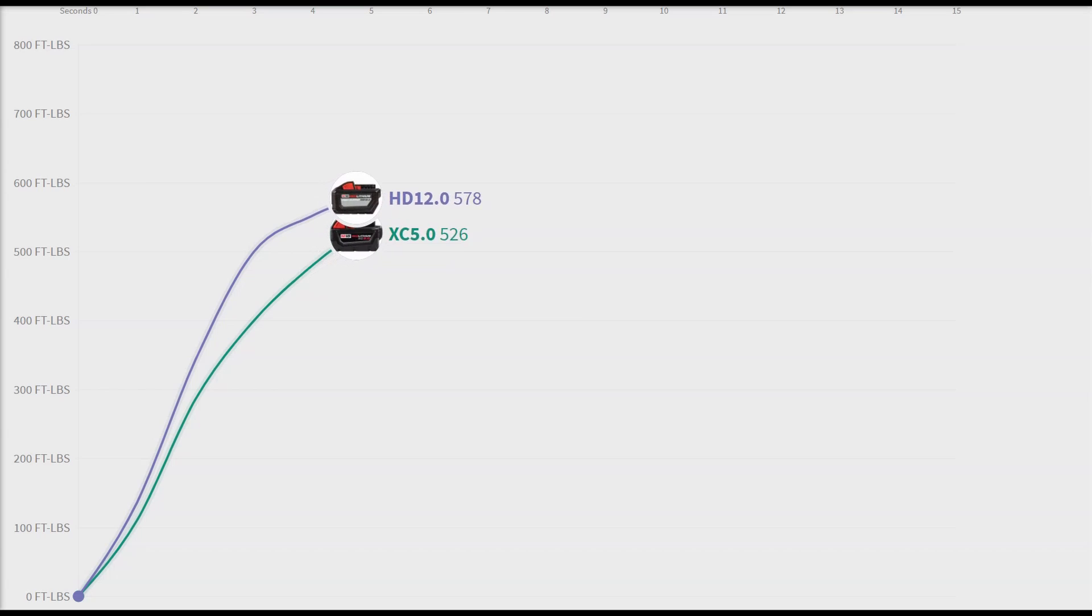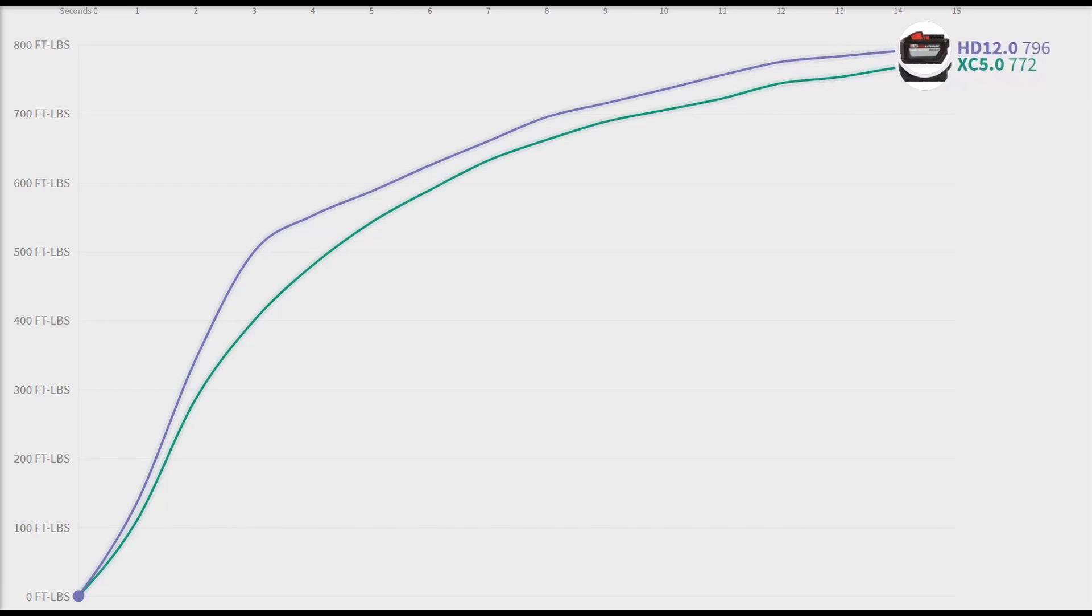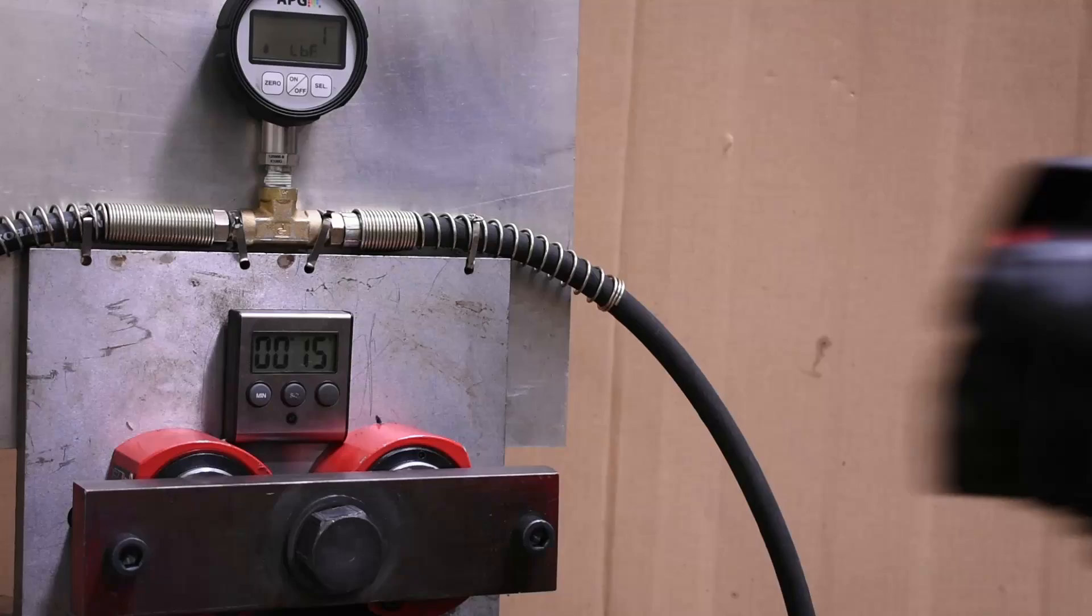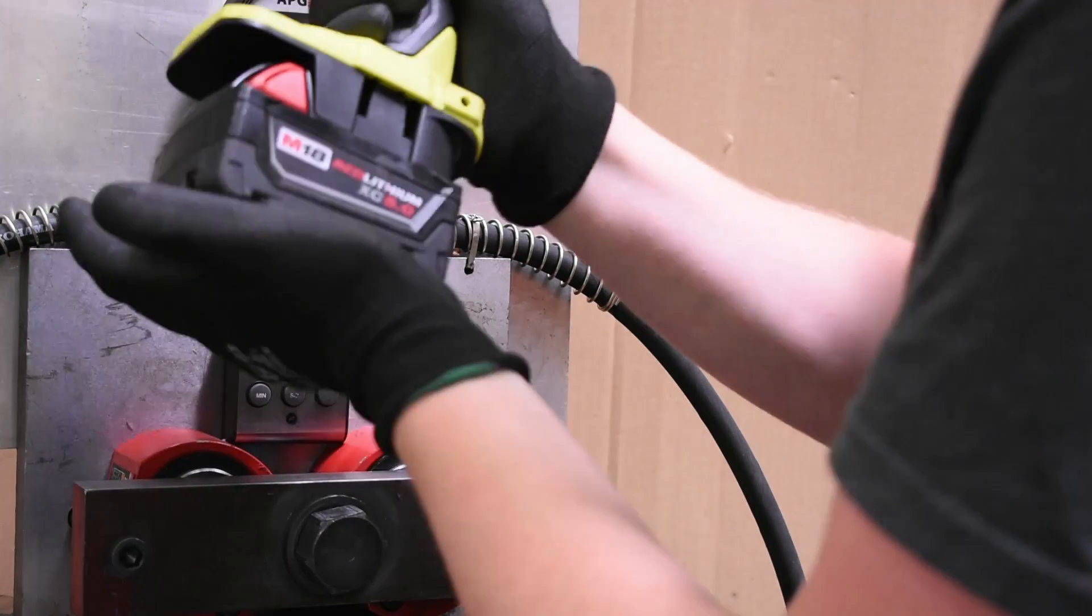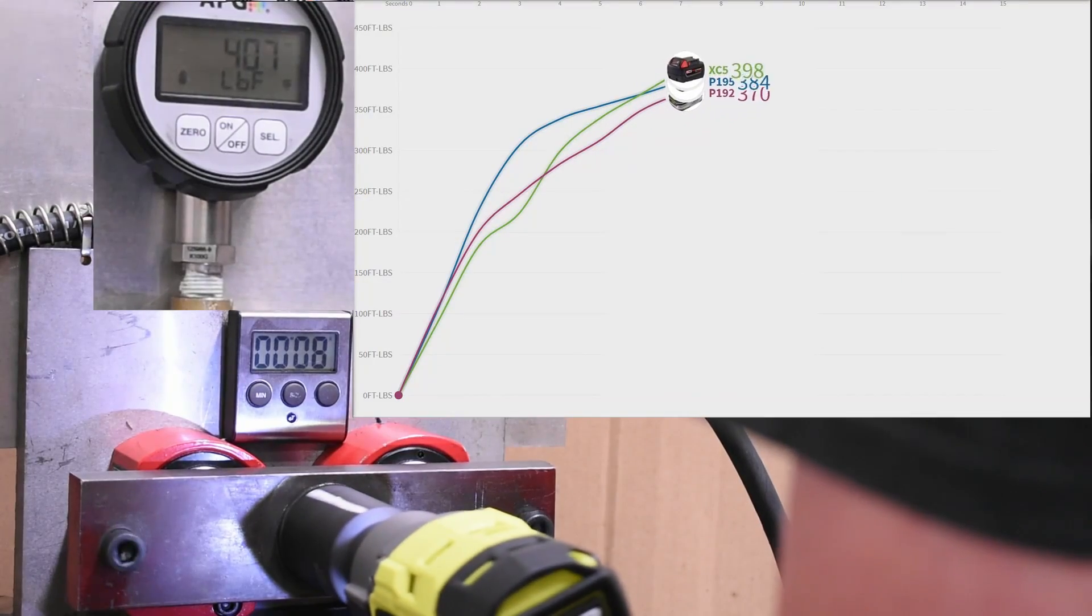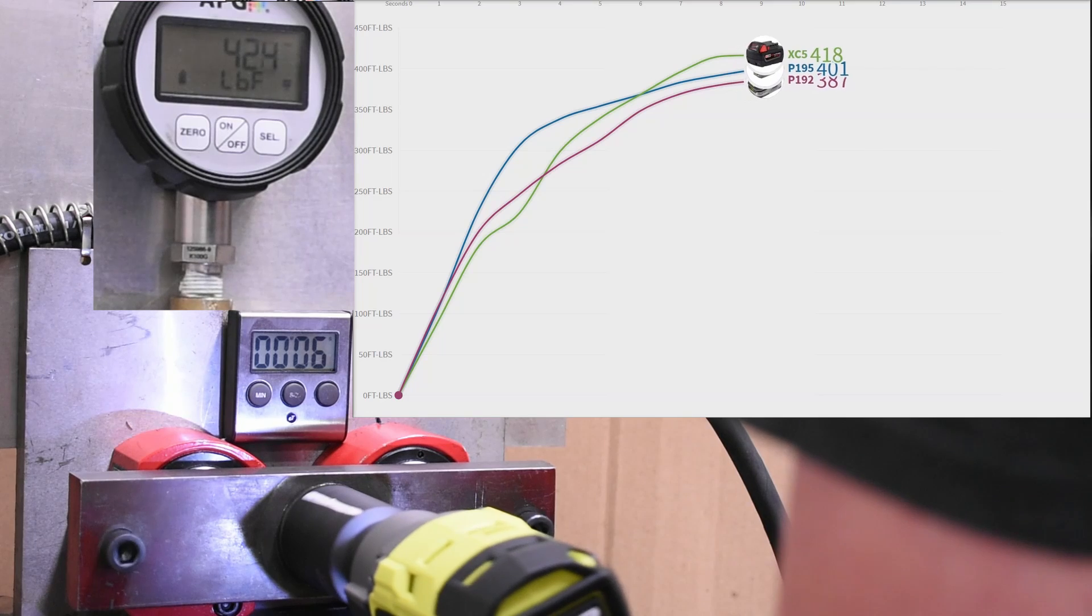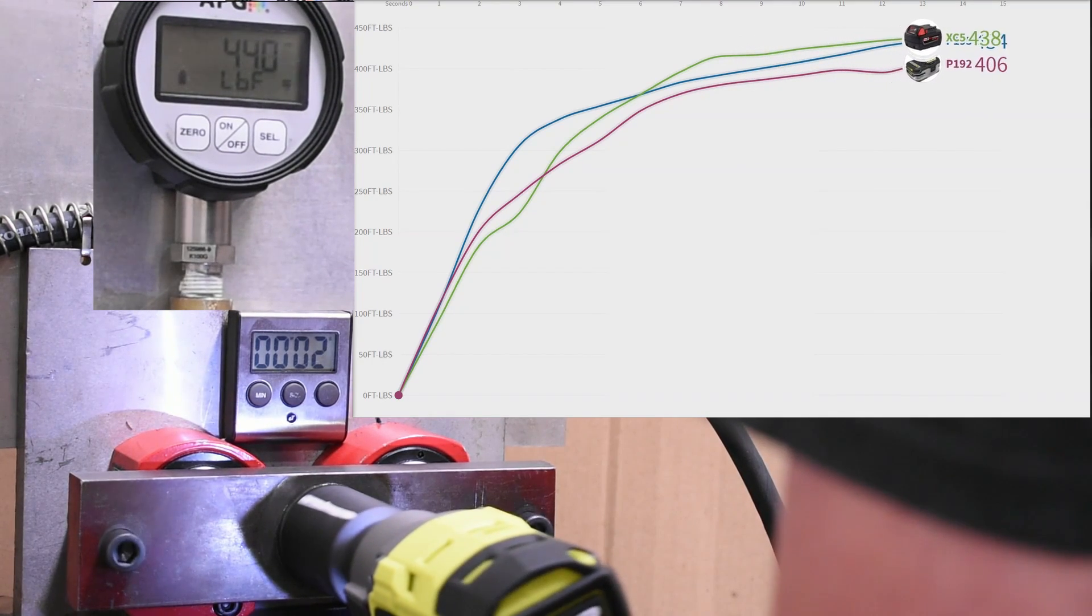With two theories as to why that may be true versus what we've seen from brands like Makita and DeWalt who see larger differences: one, the XC 5.0 battery is quite good already, which we confirmed when running it with a Ryobi P262; and two, within the brushless motor size range, we're not really starving these motors as much as we could be, and theorize that that could very well change with, for example, a one-inch impact.